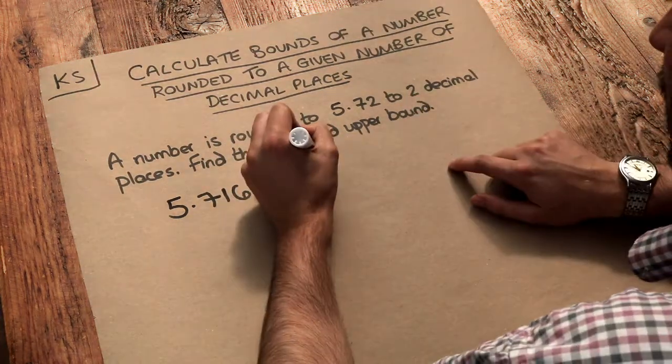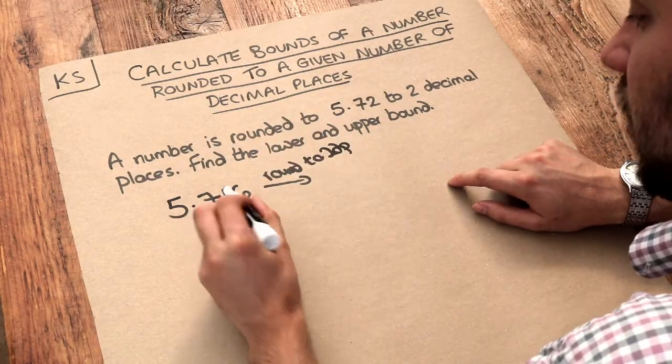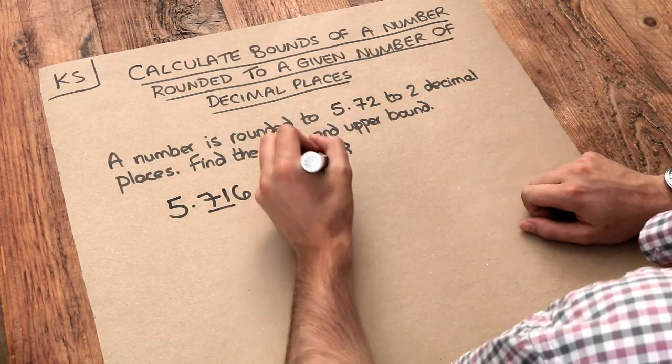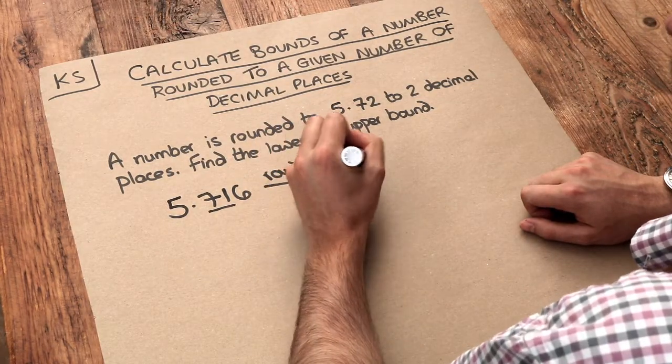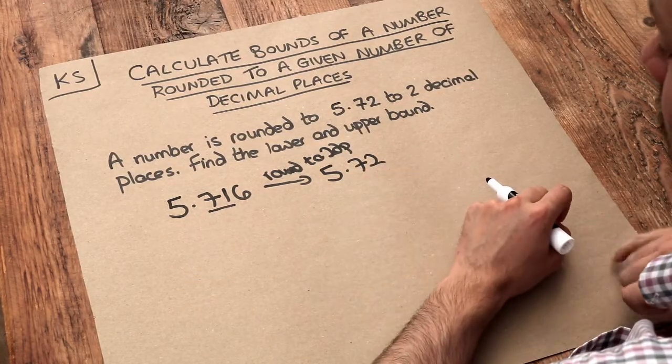to two decimal places, then we look at two decimal places, we check the digit after. Is that five or more? Yes. So that one goes up to two and you get 5.72. So certainly that is a number which rounds to 5.72 to two decimal places.